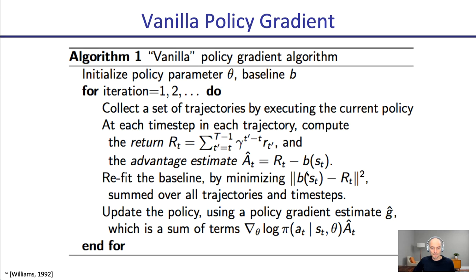The baseline can be fit using Monte Carlo estimates of the return directly, or using bootstrapping as we saw in the previous lecture. Then we update the policy using the policy gradient by taking a step in the direction of the gradient of log probability of action given state times the advantage. An action with a positive advantage increases its probability; one that was below average decreases its probability. Then we collect more trajectories and keep repeating until we reach a good optimum.